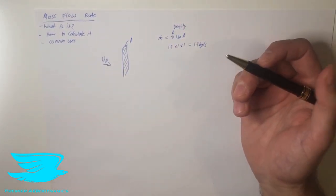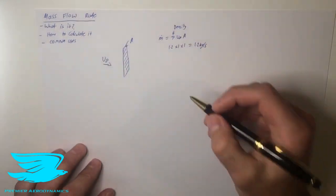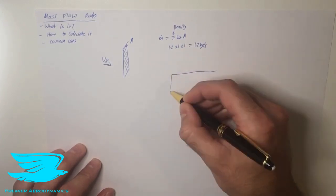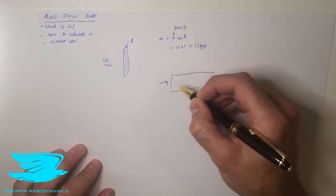So why is this important? Well it can tell us how much air we have going through a system. So for example common uses, one would be if we have let's say a turbojet, let's just say we have a regular object and it's a turbojet for example.